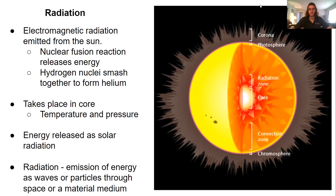How is that radiation formed in the first place so that it can come down towards the Earth? What happens is that there are nuclear fusion reactions that release energy. Essentially, there are those two types of gases in the sun — different types of matter: solids, liquids, and gases. Gases are free floating, and those two gases in the sun are hydrogen and helium.